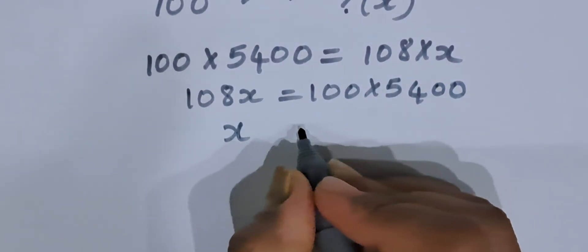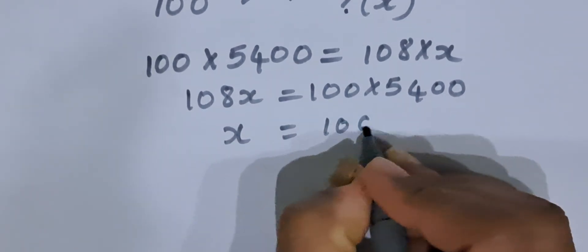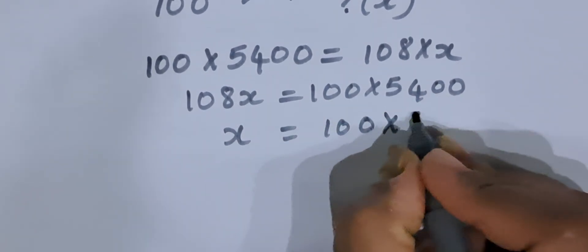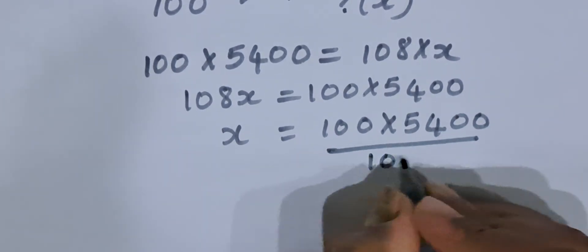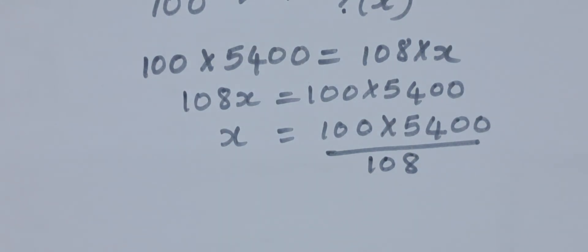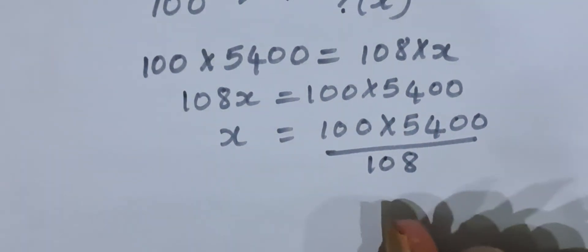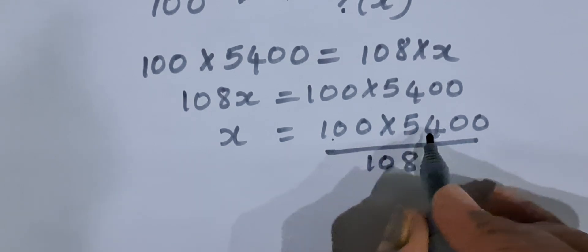Now to find out x, what we have to do? Take 108 on the right hand side. It becomes divided by this whole thing: 100 into 5,400 upon 108. 108 comes on the right hand side, it gets divided by 100 into 5,400.